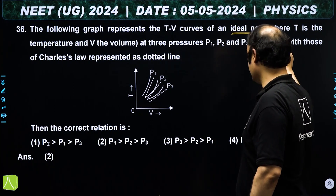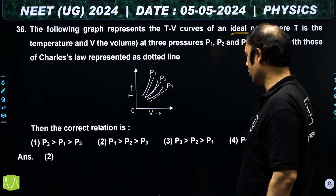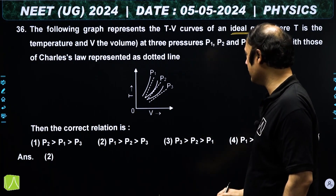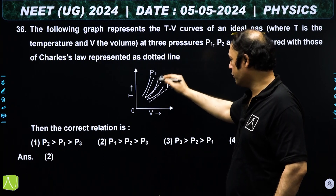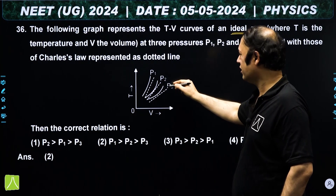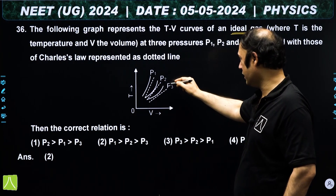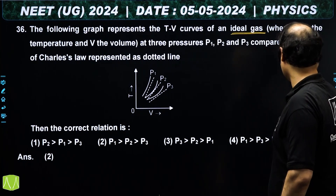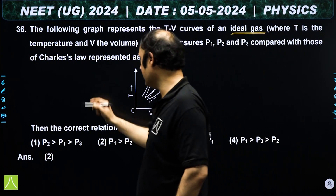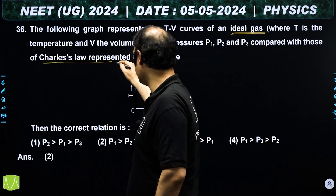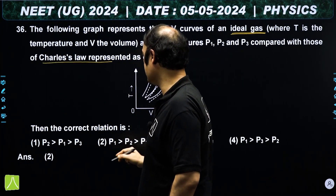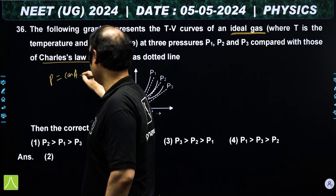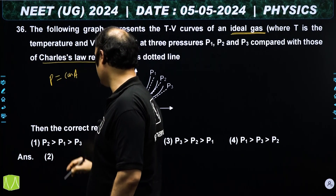Question 36: we are given some ideal gas. In the first case there is an arbitrary process, so T and V can have any random graph. In the second case, Charles' law is represented, which is a constant pressure process.